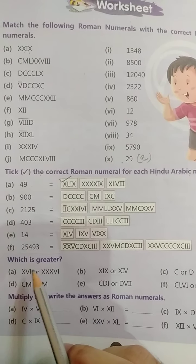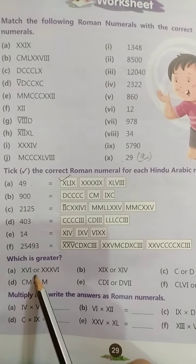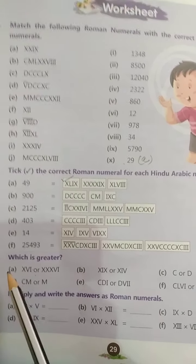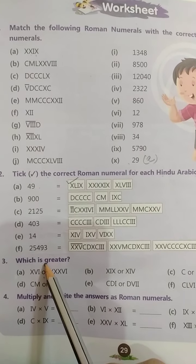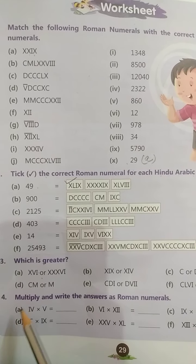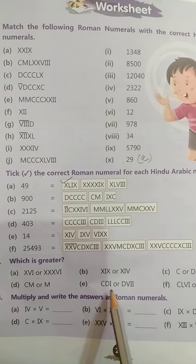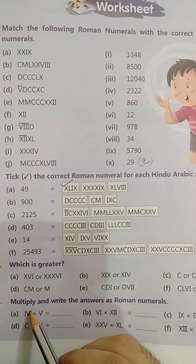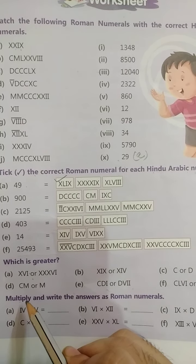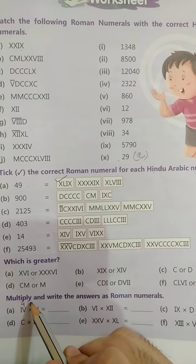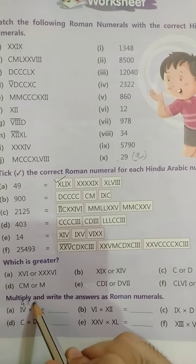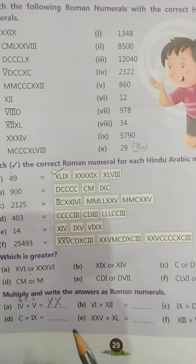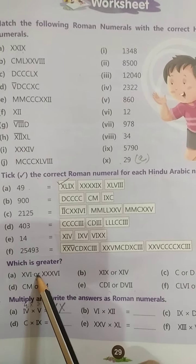Ab which is greater? Ab aapko yeh bhi compare karna hai. Aur yeh copy mein kar lena aap. To worksheet likhke, heading dalke, question number 3. Theek hai? Aur multiply and write the answer as Roman numerals. To aapko yeh multiply karne hai, Roman numerals mein answer likhna hai. To yeh main aapko ek karke batata hoon. 4 into 5, kitna hua? 4, 5 is 20. 20 kaise represent karte hain? X, X. Yeh aap book mein kar lijiye. Yeh bhi aap aisa kar lijiye.